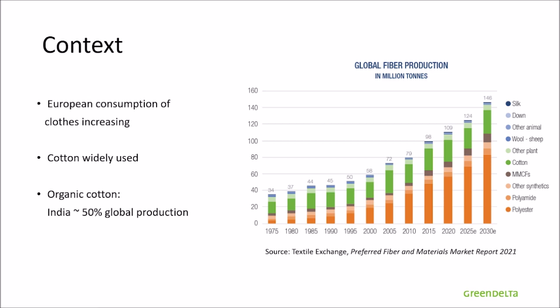Within cotton production, the portion of organic cotton is rising, notably because consumers and manufacturers are becoming more aware of the impact of traditional cotton, which requires large amounts of water but also of chemicals. India is the world's biggest producer of organic cotton, representing around 50% of the global production. For all of these reasons, we chose to evaluate an organic cotton sweater manufactured in India and then retailed in Germany.